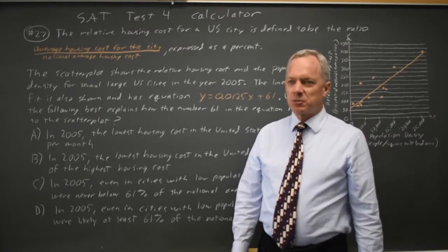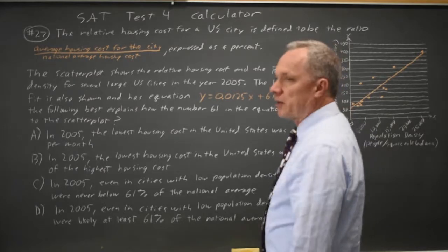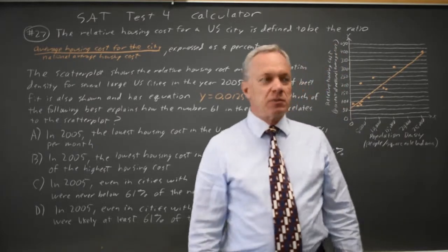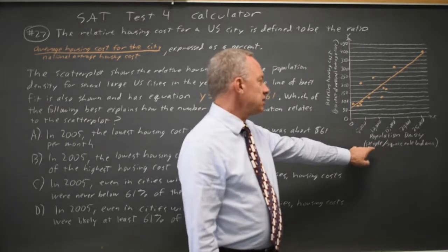This is calculator question number 27. The College Board gives us a scatter plot with a line of best fit. It's important to read the axes, and they're particularly important in this question.